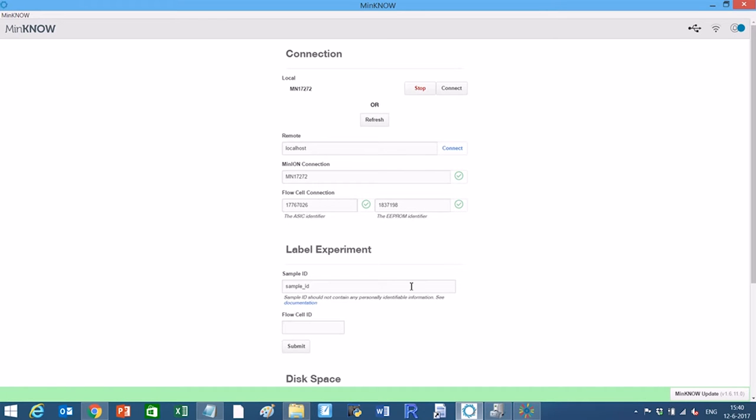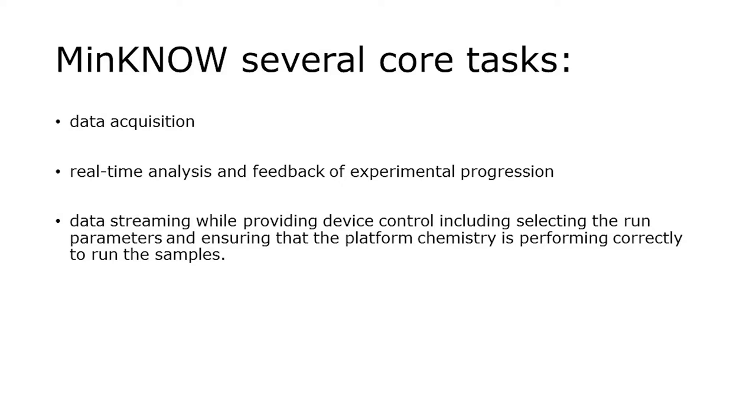Preparing for an experiment. MinIO software runs on the host computer to which the MinION is connected. MinIO carries out several core tasks: data acquisition, real-time analysis and feedback of experimental progression, data streaming while providing device control including selecting the run parameters, and ensuring that the platform chemistry is performing correctly to run the samples.